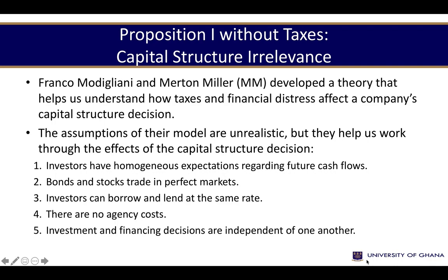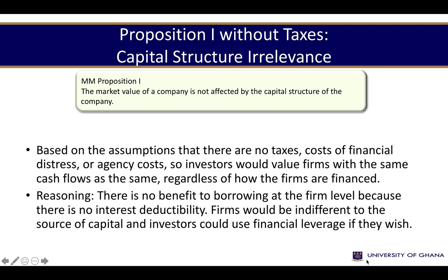There are no agency costs, and investment and financing decisions are independent of one another. These assumptions are considered unrealistic, but once we assume this perfection in the market setting, it means it does not really matter how you finance a business, because there is no real value you can add that investors cannot add for themselves. Therefore, the value of the business will not change. Proposition 1 says the market value of a company is not affected by its capital structure — there are no benefits to borrowing at the firm level because there is no interest deductibility, and investors could use financial leverage themselves if they wished.